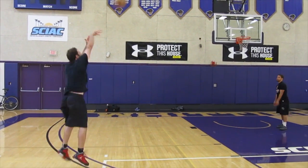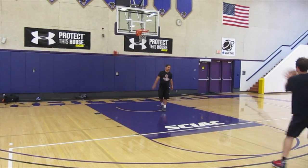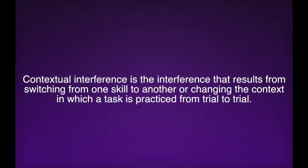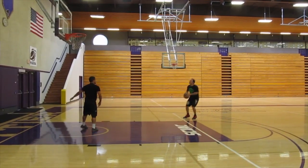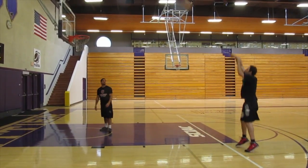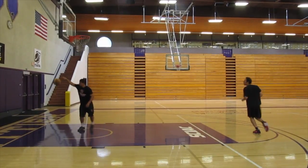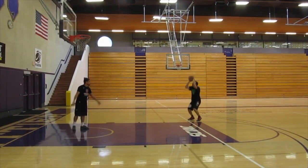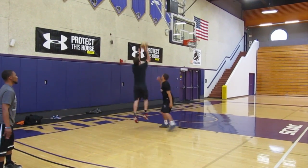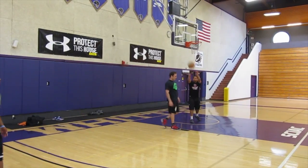While variable practice can be implemented to improve the potential of the athlete, the practice of contextual interference can provide beneficial results as well. Contextual interference is the interference that results from switching from one skill to another, or changing the context in which a task is practiced from trial to trial. The athlete is practicing a variety of shots under different conditions, which forces him to use his schema and adjust to the current condition presented. Implementing contextual interference allows for increased learning as the interference causes the athlete to analyze and react to each situation as seen best fit.